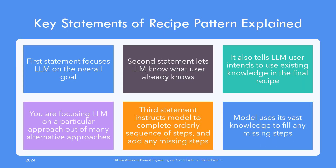The first statement focuses the large language model on the overall goal so that the sequence of steps would be organized and completed with the intention of achieving this end goal. The second statement lets the model not only know the steps the user is already aware of, but also lets the model know that the user intends to use these steps in the final sequence. If you have watched the alternative approaches pattern video, you would know there would be multiple ways of accomplishing the same objective. Here the user is nudging the model towards the one he is most familiar with.